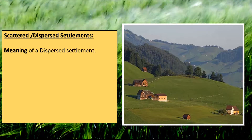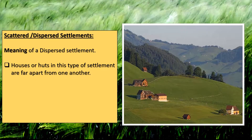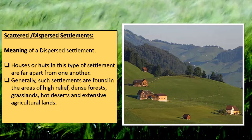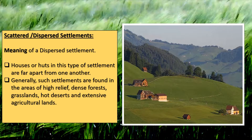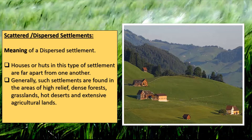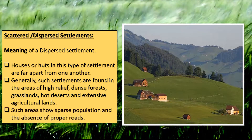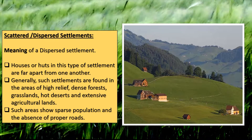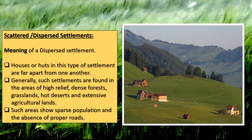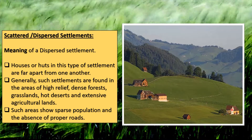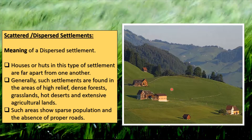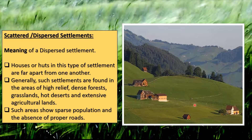In scattered or dispersed settlements, houses or huts are far away from one another. Generally such settlements are found in areas of high relief, dense forests, grasslands, hot deserts, and extensive agricultural lands. Such areas show sparse population and absence of proper roads. In the figure, the houses are far away from each other and located at height on high relief.